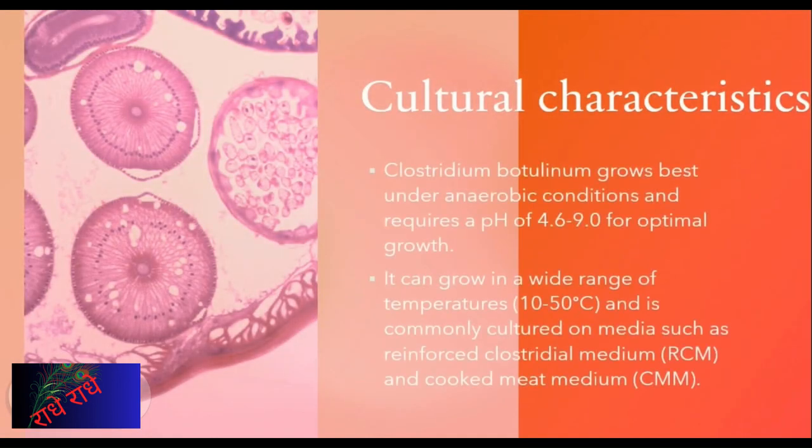Clostridium botulinum is an anaerobic bacterium, requiring a low-oxygen environment for optimal growth. It can grow in temperatures between 10 and 50 degrees Celsius, and thrives on media like reinforced clostridial medium and cooked meat medium. With an optimal pH range of 4.6 to 9.0, Clostridium botulinum is a hardy and dangerous organism.